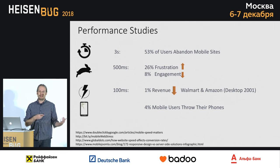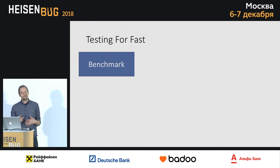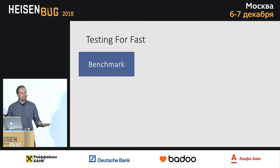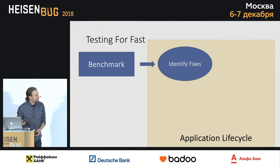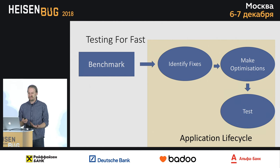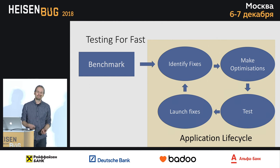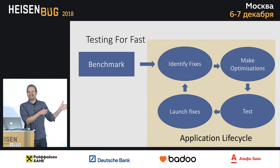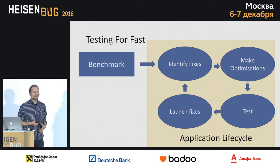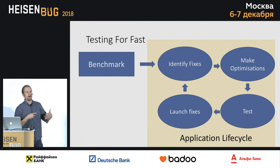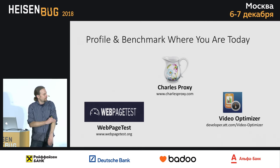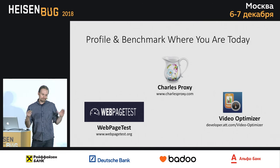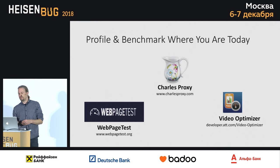So how do we test for it? How do we find what's slow in our applications? The first thing we're going to do is benchmark where we are today — assuming we all have a mobile app already. Then we input that into our application lifecycle: identify the fixes, make the optimizations, test it, launch the fixes. And this is an ongoing cycle — you can't just do it once and forget it, because you're constantly adding content and latency to your mobile application. The tools I typically use are Charles Proxy, WebPageTest for web pages, and Video Optimizer, which despite its name tests iOS and Android apps. I helped build it when I worked at AT&T.